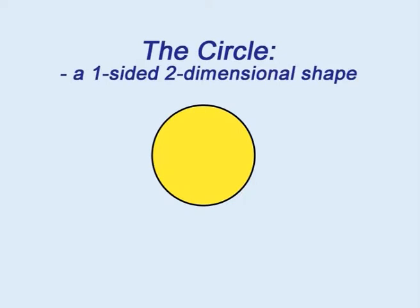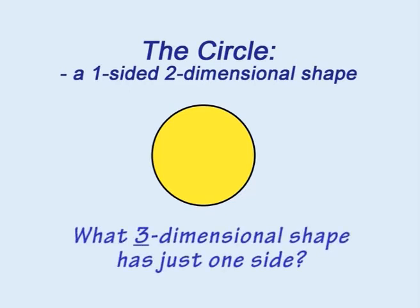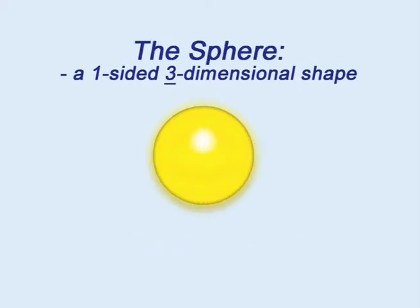The circle is a two-dimensional shape with just one side that curves around to meet itself. Can you guess what three-dimensional shape has just one side? It is the sphere, which has a single curved surface.